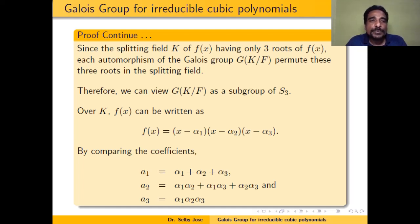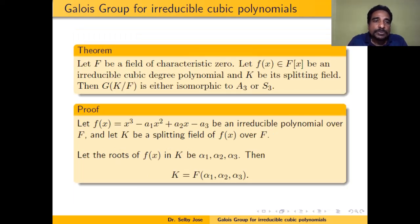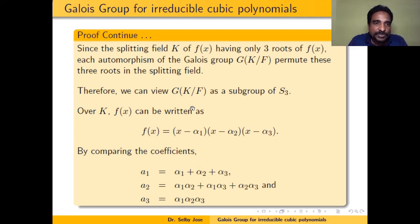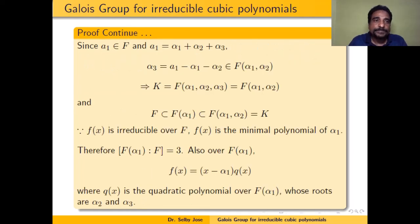Therefore, we can view the Galois group of K over F as a subgroup of S3. Over K, since K is the splitting field of f(x), we can write f(x) = (x - α1)(x - α2)(x - α3). Comparing coefficients with x³ - a1·x² + a2·x - a3, we get a1 = α1 + α2 + α3, a2 = α1α2 + α1α3 + α2α3, and a3 = α1α2α3. Since a1 is in F, we can write α3 = a1 - α1 - α2, so α3 is in F(α1, α2).